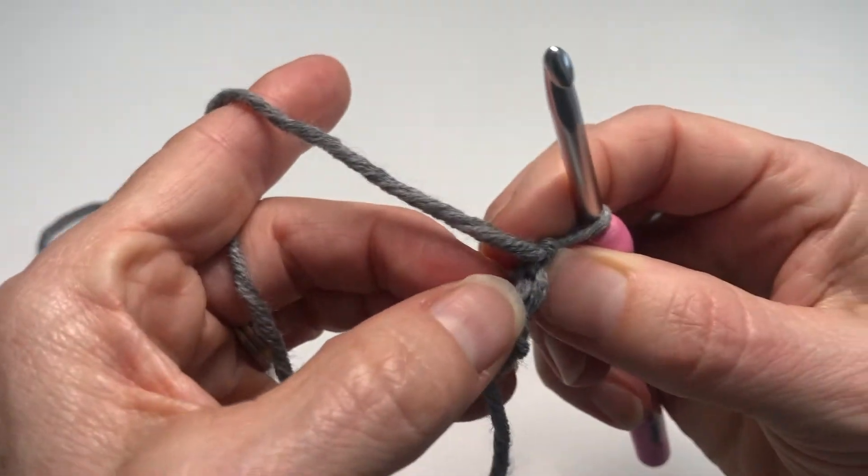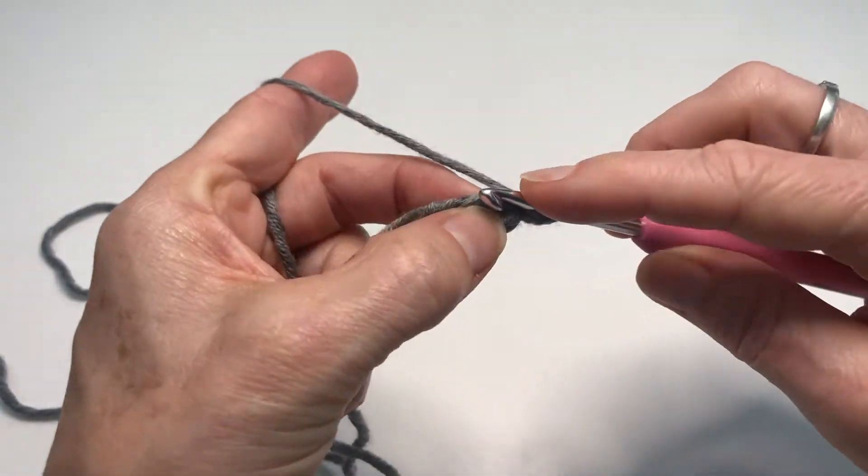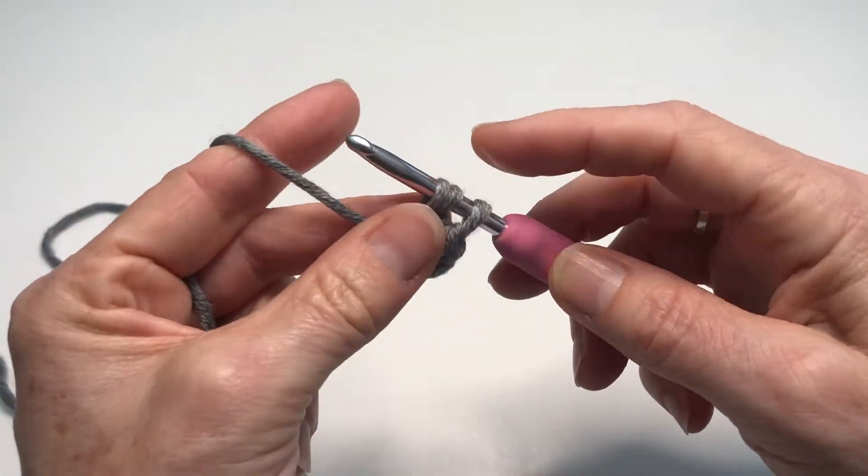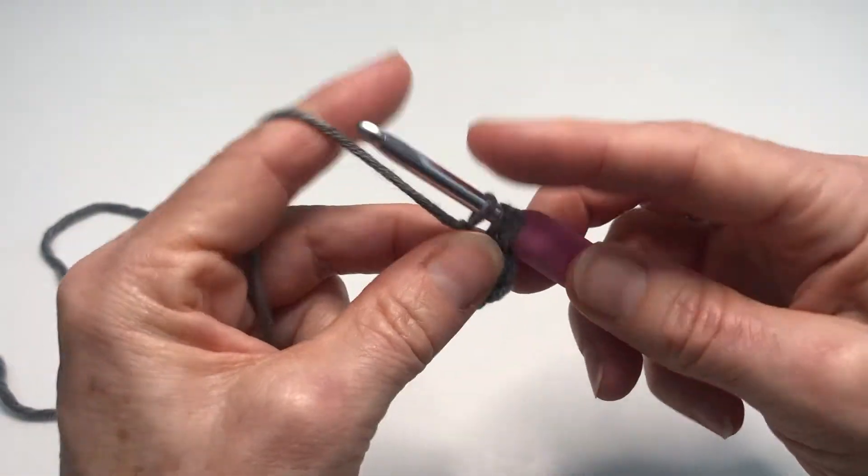You can just see the V there, so we're going to insert our hook underneath that V. Yarn over and pull through. Now we make our chain first, and then we make our half treble.